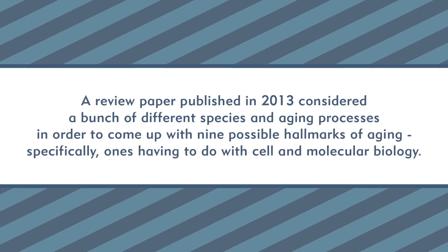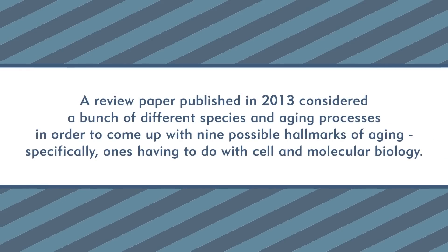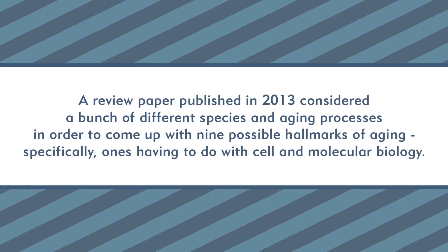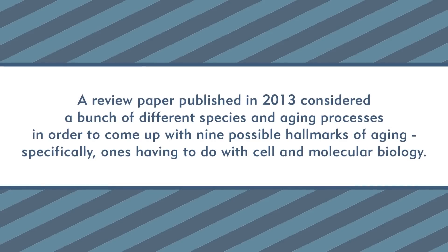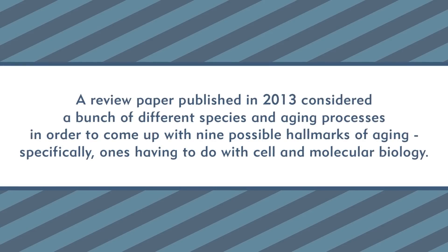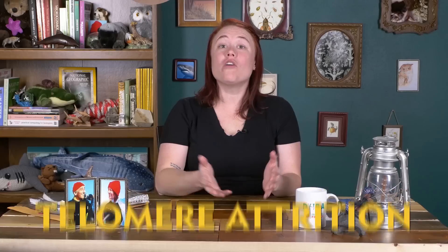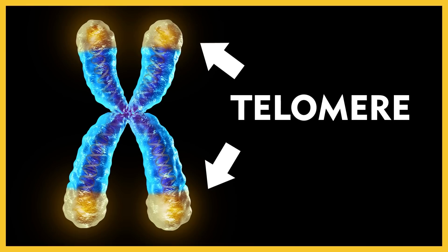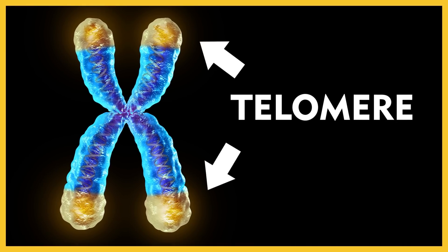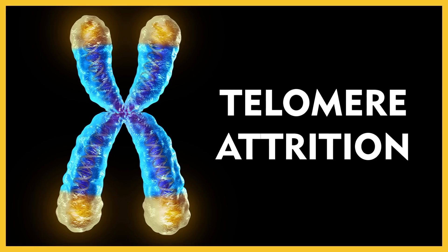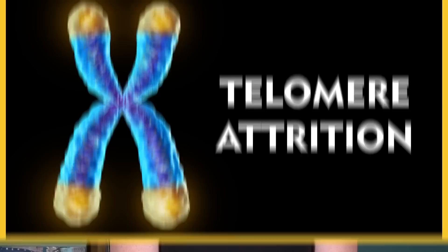A recent paper published in 2013 considered a bunch of different species and aging processes in order to come up with nine possible hallmarks of aging, specifically ones having to do with cell and molecular biology. One of these aging hallmarks is telomere attrition, and it's one of the most fascinating age-related processes. Overall, organisms accumulate genetic damage over the course of a lifetime. However, one particular region of chromosomes called the telomere gets hit way harder than others. Telomere attrition — the shortening of this specific chromosomal region — is common to normal aging processes across mammals.